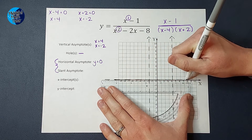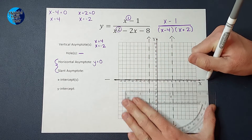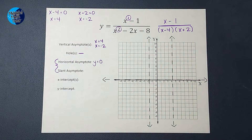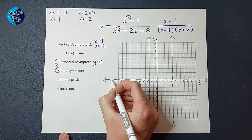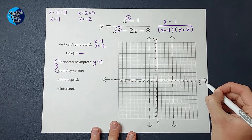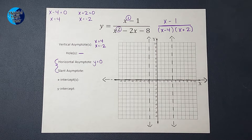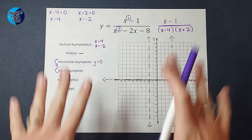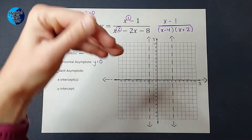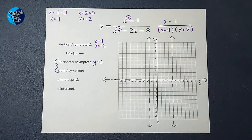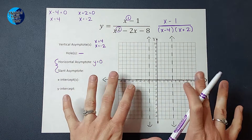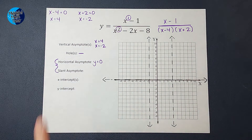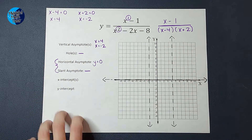A major side note: horizontal and slant asymptotes can actually be crossed. You might wonder why we have them if they can be crossed — but they still help us understand the shape of our graph and what areas our graph goes towards. So even though horizontal and slant asymptotes can be crossed, they still matter. Because I had a horizontal asymptote, there is no slant asymptote.